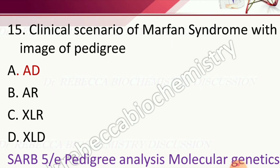Question 15: Clinical scenario of Marfan syndrome with image of pedigree — options are autosomal recessive, X-linked recessive, X-linked dominant, or autosomal dominant. The answer is autosomal dominant.